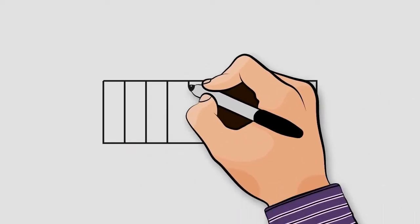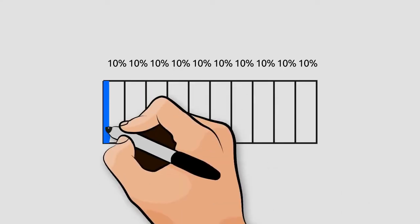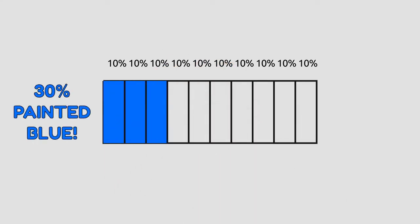Now, suppose we divide the rectangle into 10 equal parts. Each of these parts is 10% of the entire rectangle, because 100% divided by 10 equal parts gives us 10% for each part. Now, if we want 30% of our rectangle to be painted blue, we only have to paint 3 parts blue. And if we want 70% to be painted red, we paint the remaining 7 parts red.